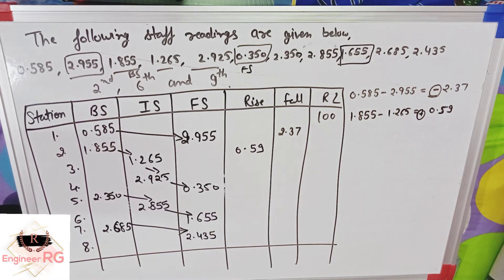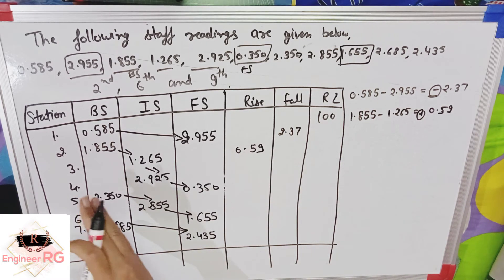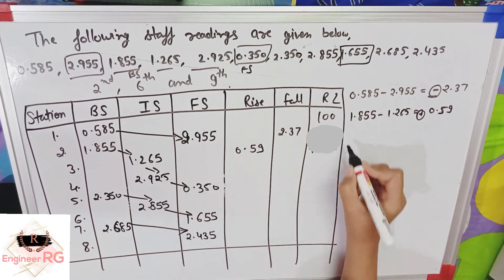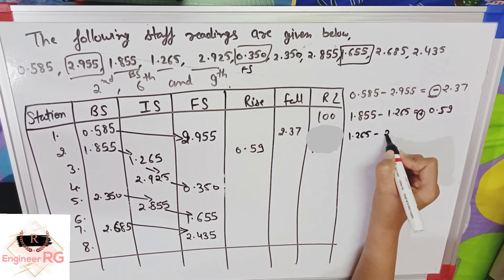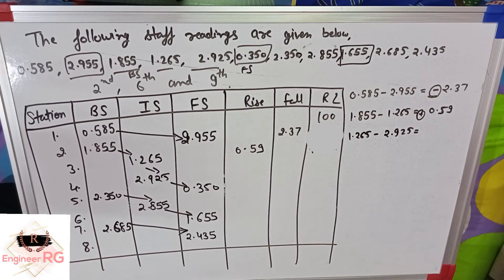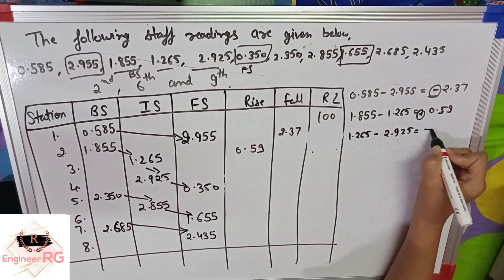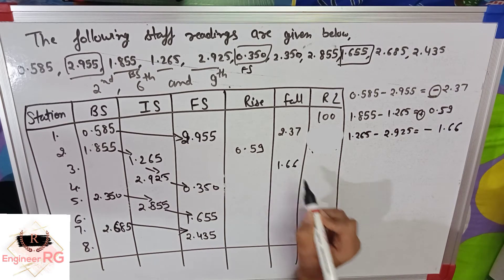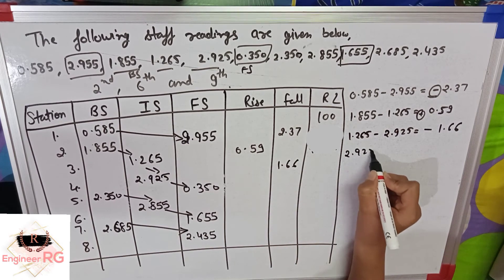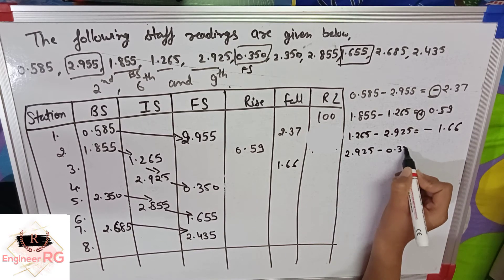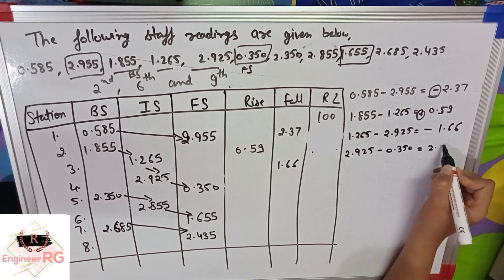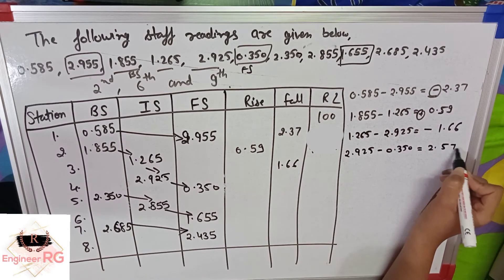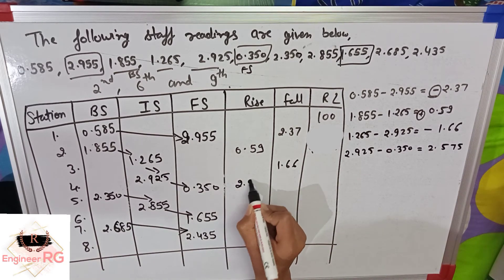Now I have left two values here. If you want to choose, then remove all values rise and fall, then remove it from the other side. Or we can remove it from the other side. The value is negative, 1.66. We will write in fall. Then, 2.925 minus 0.350, value is positive, 2.575. Rise.